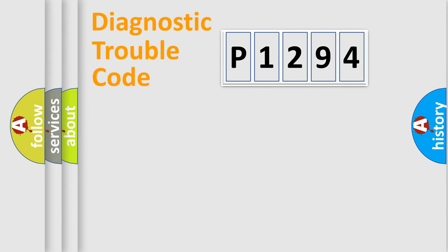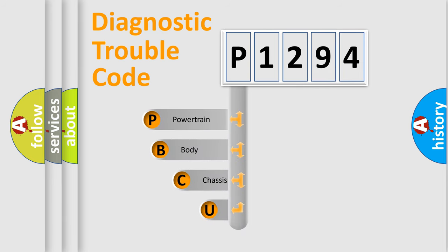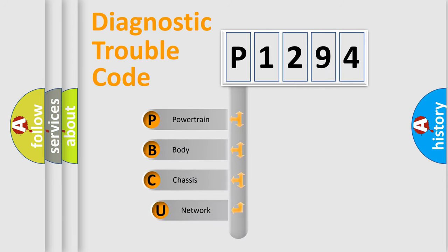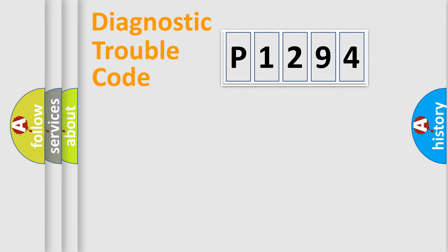Let's do this. First, let's look at the history of diagnostic fault code composition according to the OBD2 protocol, which is unified for all automakers since 2000. We divide the electric system of the automobile into four basic units: Powertrain, Body, Chassis, and Network.